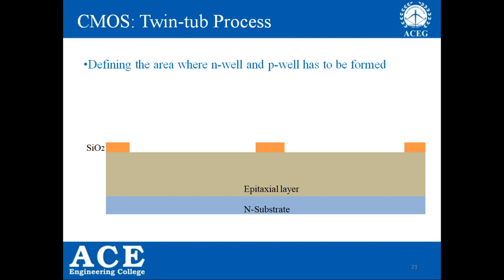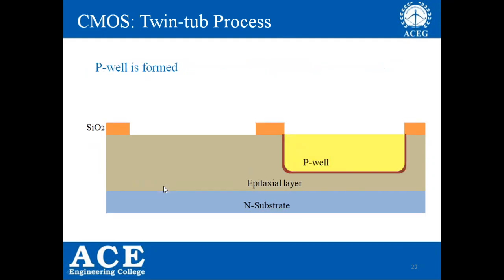After selecting the area, we designate one region for N-well and the other for P-well. There is no fixed condition on which side — you can take P-well on one side and N-well on the other. To form the P-well, we place a mask over the N-well region and diffuse P-type impurities, giving us a P-well. The doping method used is diffusion in most cases, because we require a deep well — not ion implantation.